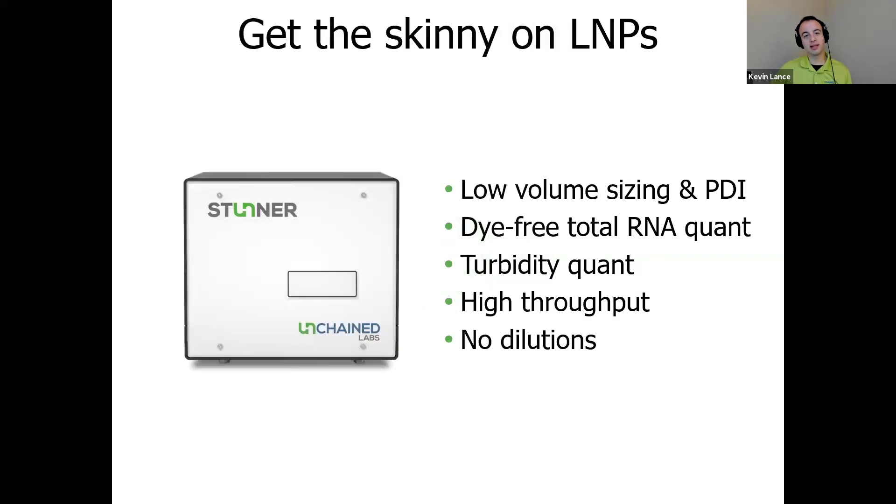With the RNA LNP app, Stunner delivers low-volume, high-throughput DLS without the need for dilutions to get the size and PDI data you need. On the same two-microliter sample, Stunner quantifies total RNA concentration without the need for any reagents, standards, or fluorescent dyes, and quantifies turbidity. All this is done in a 96-well plate-based format that powers high-throughput analysis of LNP samples fresh out of mixing.